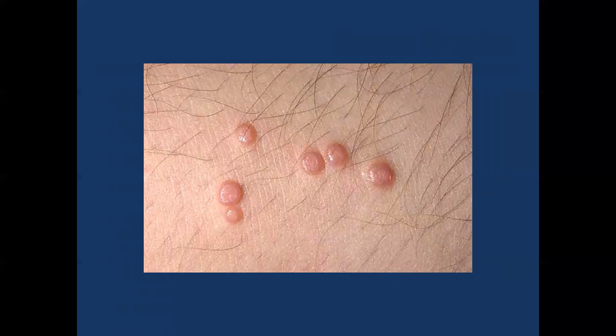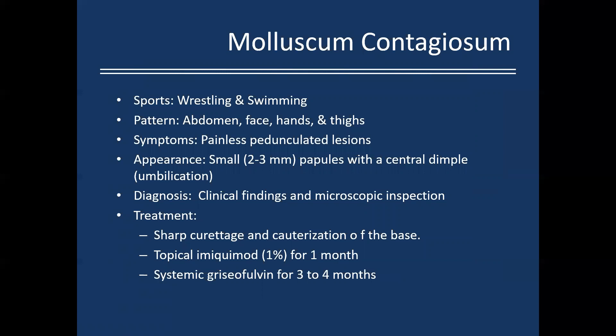Moving on — this next case shows skin-colored, pinkish papules with a little central umbilication. This is molluscum contagiosum. We see this most commonly in wrestling and swimming. Distribution is typically the abdomen, face, hands, and thighs. Symptoms are painless, typically pedunculated lesions, relatively small — two to three millimeters — with that central dimple or umbilication.